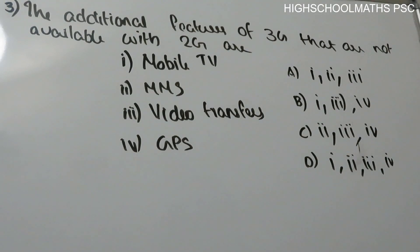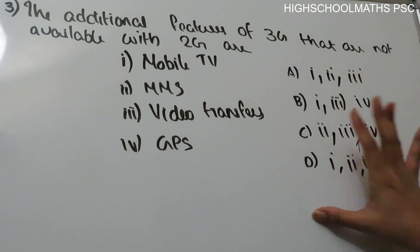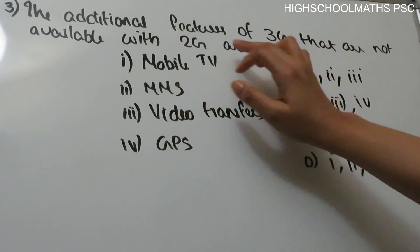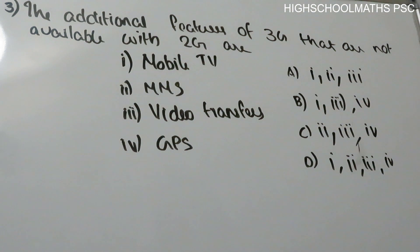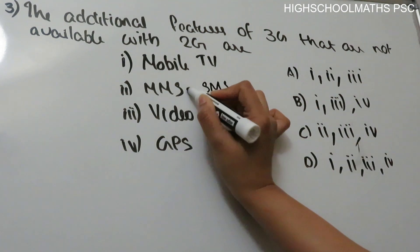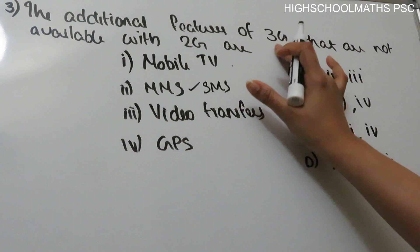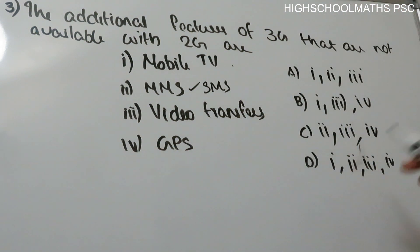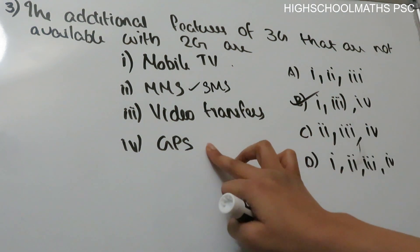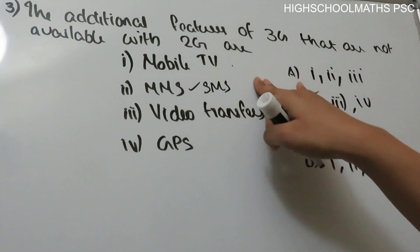Question 3: The additional features of 3G that are not available with 2G. Options: mobile TV, MMS, video transfer, GPS. The second generation (2G) already supports SMS and MMS. Therefore, mobile TV, video transfer, and GPS are the additional features of 3G not available in 2G. Option B is the answer.